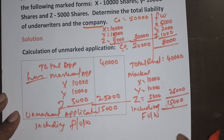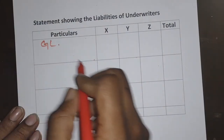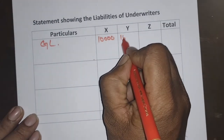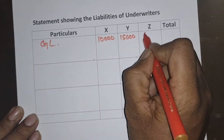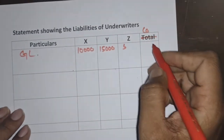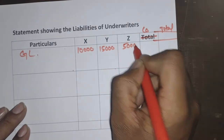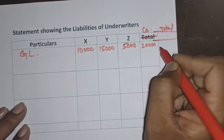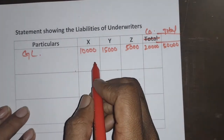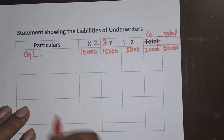Now let us calculate the gross liabilities. We set up columns for X, Y, Z, Company, and Total. X underwritten: 10,000; Y: 15,000; Z: 5,000; Company column: 20,000; overall total: 50,000. The gross liability ratio is 2:3:1.